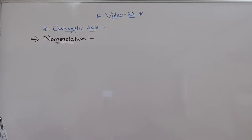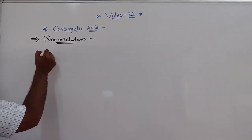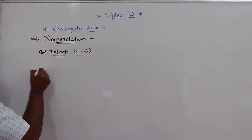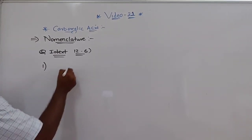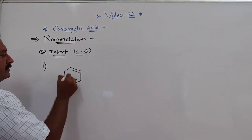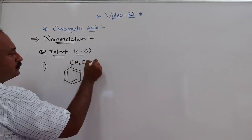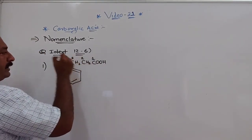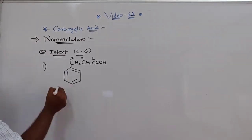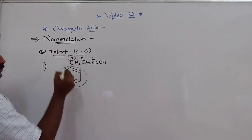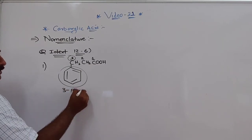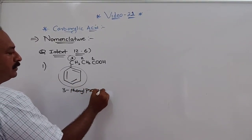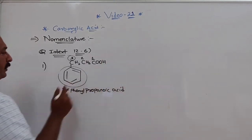In the next video we will be continuing about the structure of carboxylic acid. For in-text question 12.6, the first structure has a benzene ring with CH2, CH2, CH2, COOH. Carbon 1 is the COOH carbon, 2 and 3 follow, so at the third position, phenyl group is there. The IUPAC name is 3-phenylpropanoic acid.